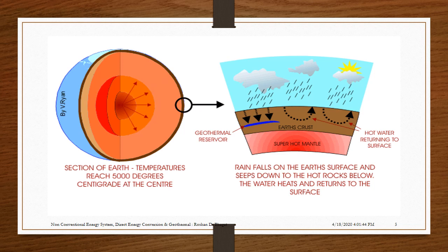The second image shows that rain falls on the Earth's surface and seeps down to the hot rocks below. The hot water heats up and returns to the surface.